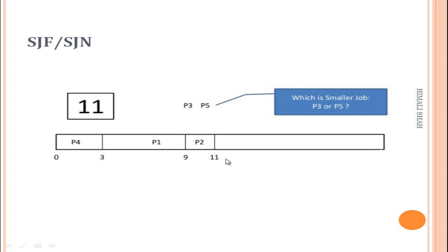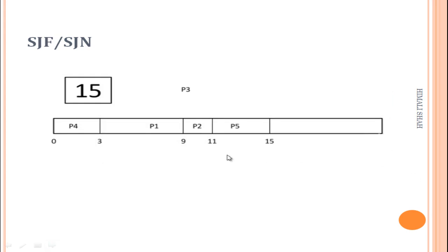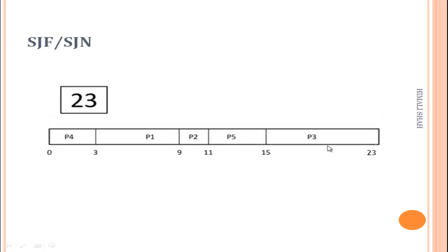After time 11, the remaining processes are P3 and P5. P5 has burst time 4 and P3 has burst time 8, so P5 is the minimum. P5 executes next for 4 units: 11 plus 4 equals 15. The only remaining process is P3, with burst time 8. So 15 plus 8 equals 23.